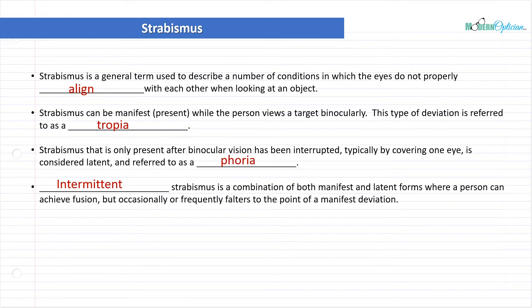Intermittent strabismus is a combination of both manifest and latent forms where a person can achieve fusion, so they're able to get both eyes to work together, but occasionally or frequently falters to the point of manifest deviation. If a person could seem ortho all the time and then they start reading and get tired, all of a sudden one of the eyes is starting to drift away because it's losing fusion. That latent problem has become manifest.